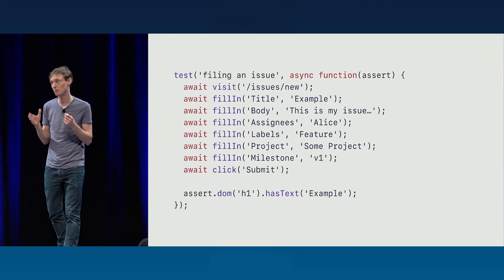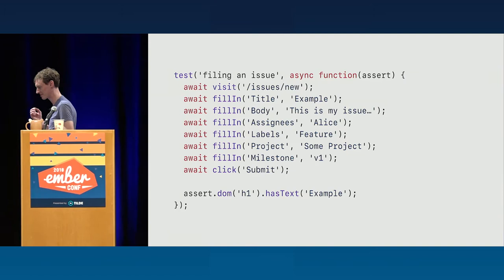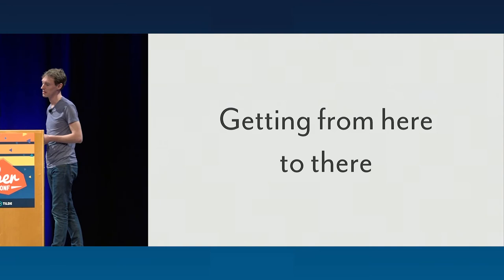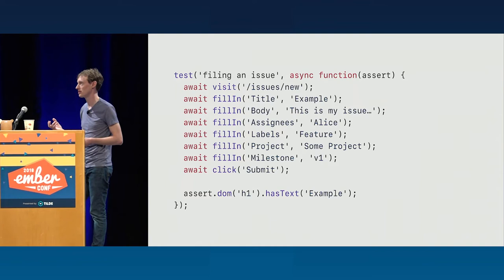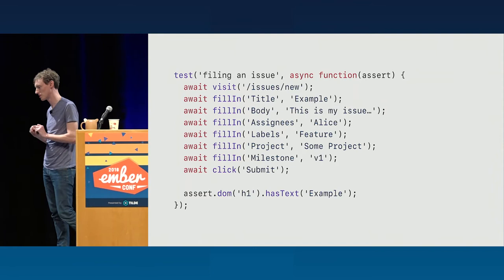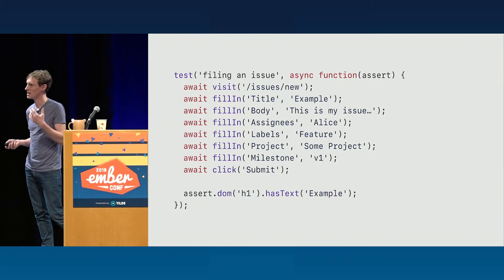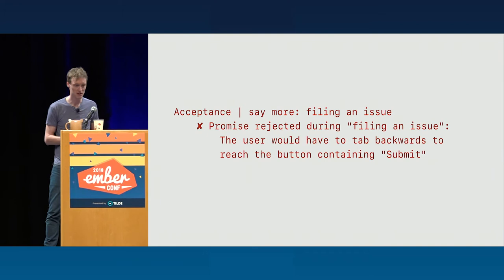Now we've taken steps in the direction of applying the rule of least power and imposing accessibility. Now let's ask what more this test can say. How about getting between elements — can we say something about that? Looking at this test now, it's almost like the kind of script you would give to a human tester: visit this page, fill in the title with 'example,' hit tab, type 'this is my issue,' tab, type, tab, type, tab, return to submit the form.